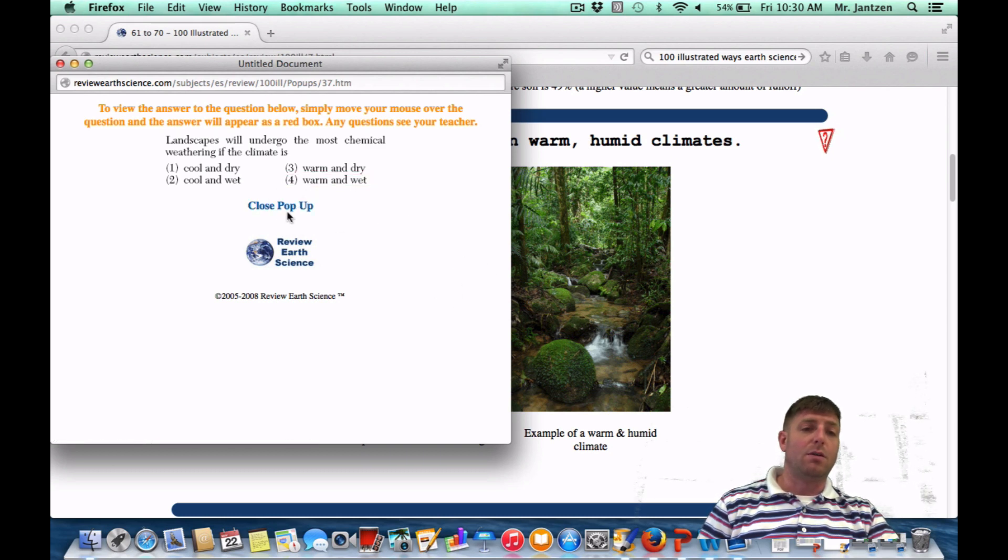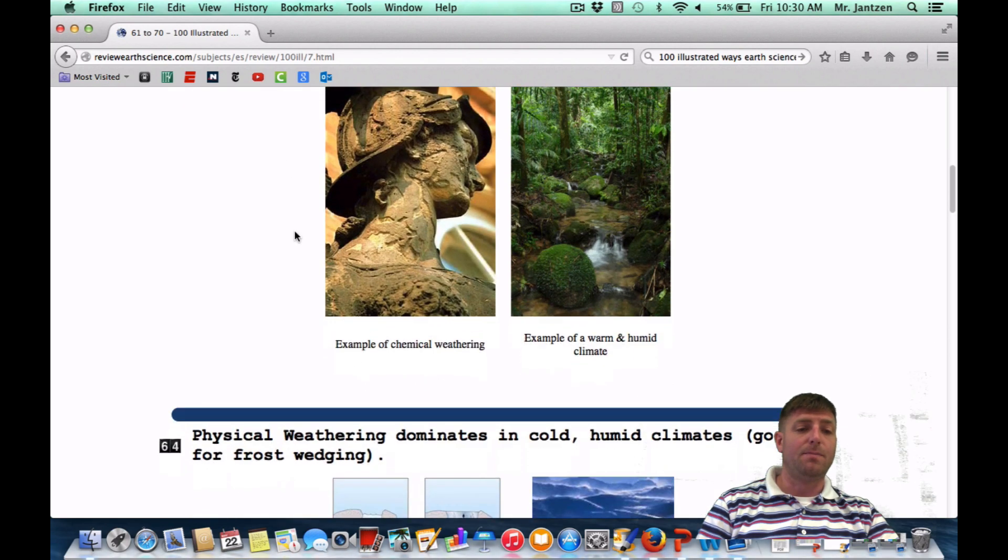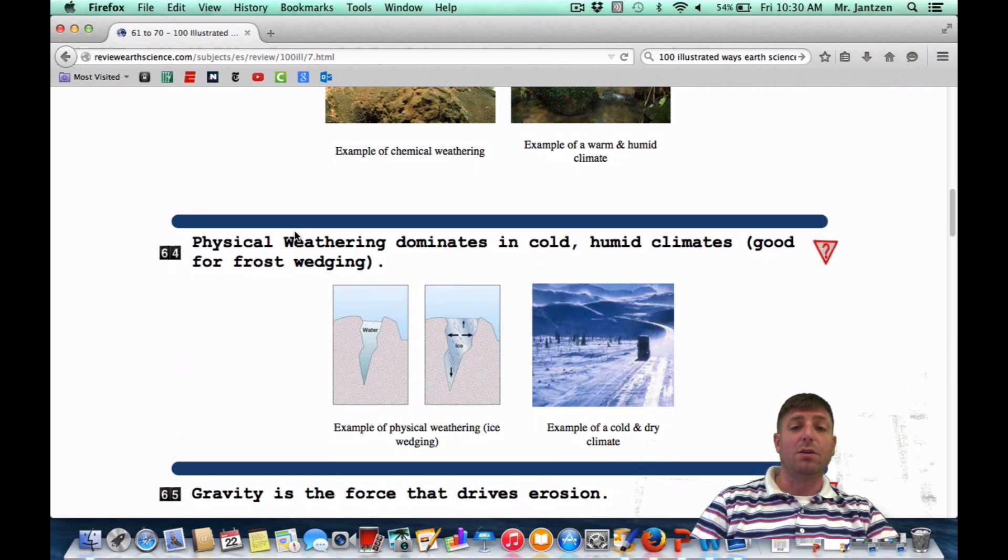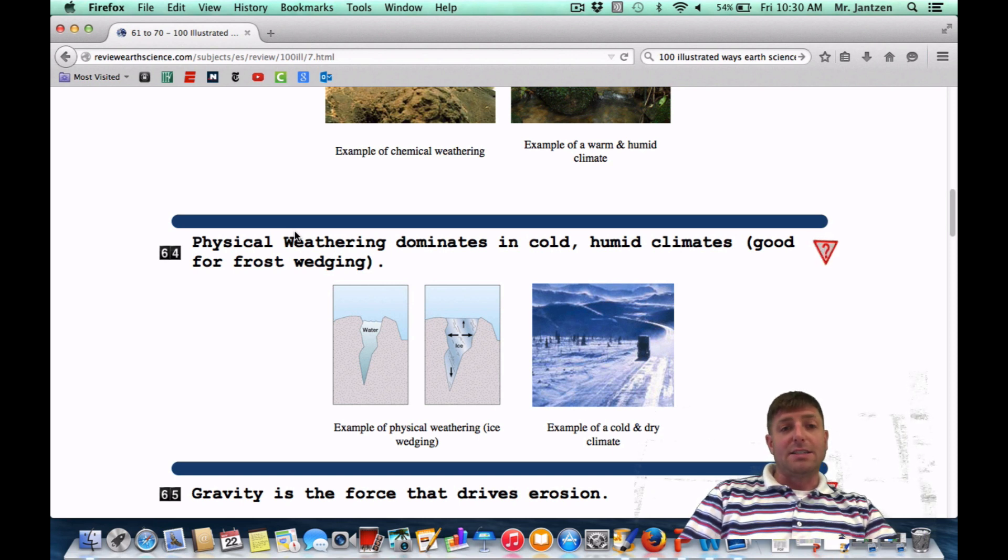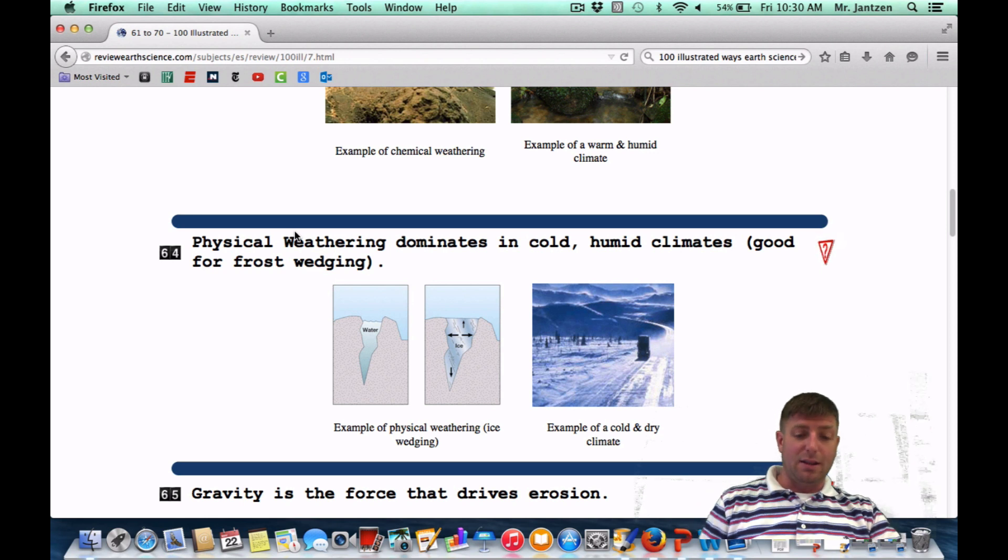Let's move on to number 64: Physical weathering dominates in cold and humid climates, good for frost wedging. So cold and wet or warm and wet, those are your two different types of weathering. Cold and wet for physical weathering. Once again, ice expands when it freezes, so it's really going to get in there and wedge the rock apart. That's going to occur often, especially in a climate that fluctuates above and below freezing. Then you're going to get a lot of frost action going on.